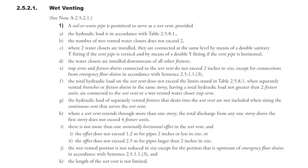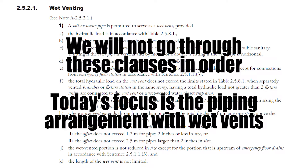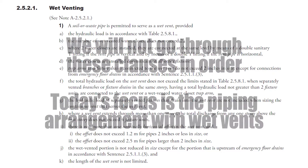In the plumbing code we have a section dedicated to wet venting: clause 2521. There are a number of different clauses within it, and we're not going to go through them in order — we're going to go through them in a way that is easiest to understand. Today's focus is piping arrangement, so we will only look at clauses that deal with piping arrangement in a wet vented system.